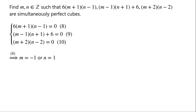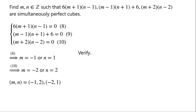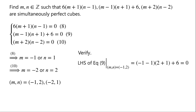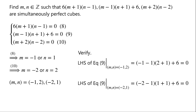From equation 8, either m equals negative 1 or n equals 1. From equation 10, either m equals negative 2 or n equals 2. So clearly, (m, n) equal (negative 1, 2) or (negative 2, 1) satisfy both equations 8 and 10. We then verify whether they satisfy equation 9. When (m, n) equals (negative 1, 2), the left-hand side equals (negative 1 minus 1) times (2 plus 1) plus 6, which equals 0. When (m, n) equals (negative 2, 1), the left-hand side equals (negative 2 minus 1) times (1 plus 1) plus 6, which equals 0. So both sets are solutions.